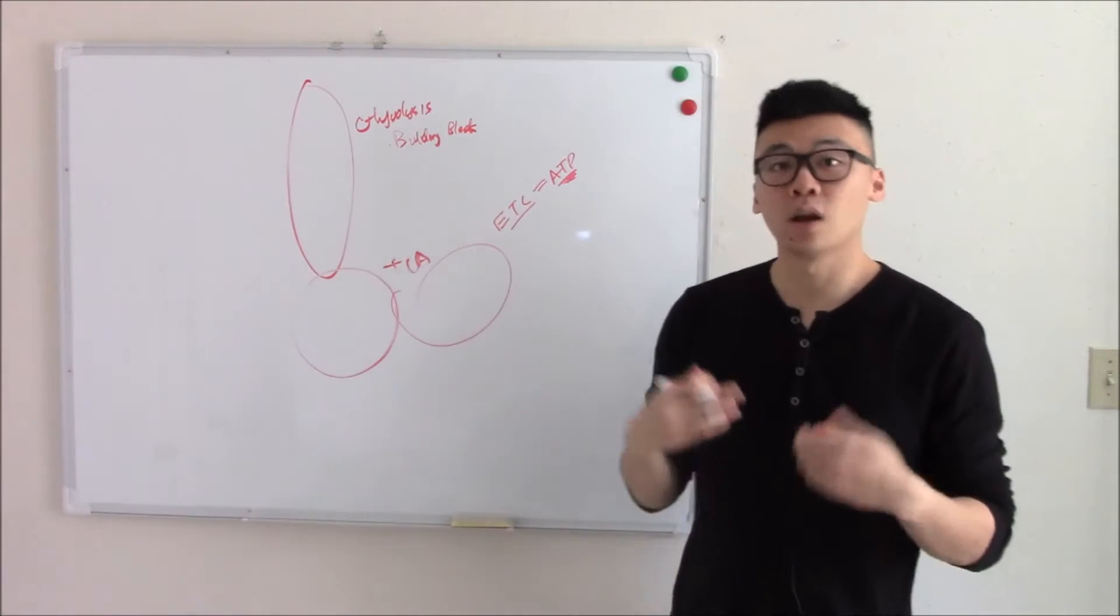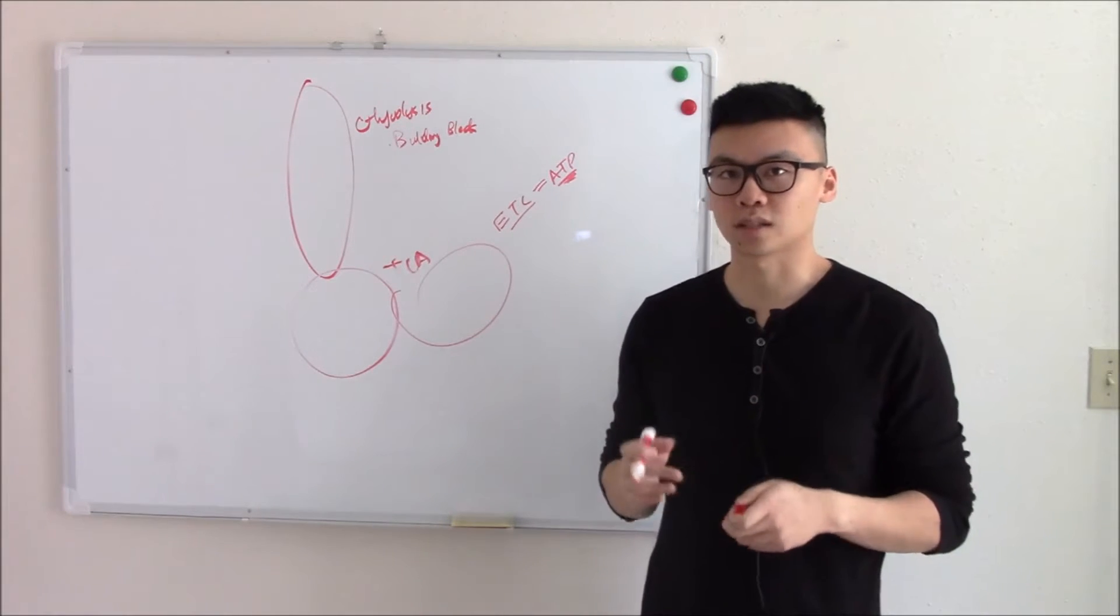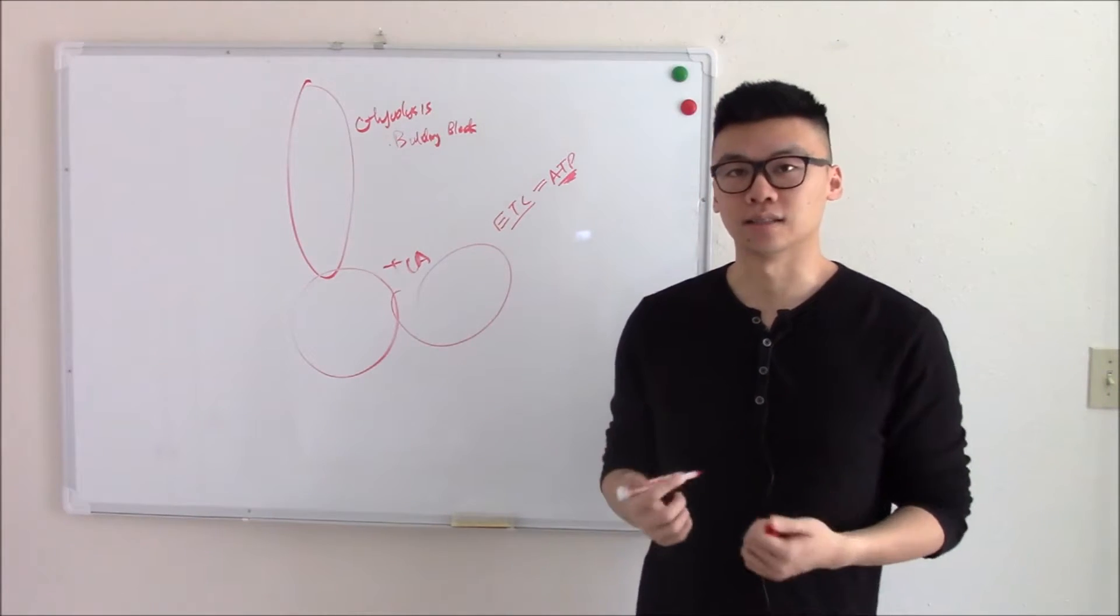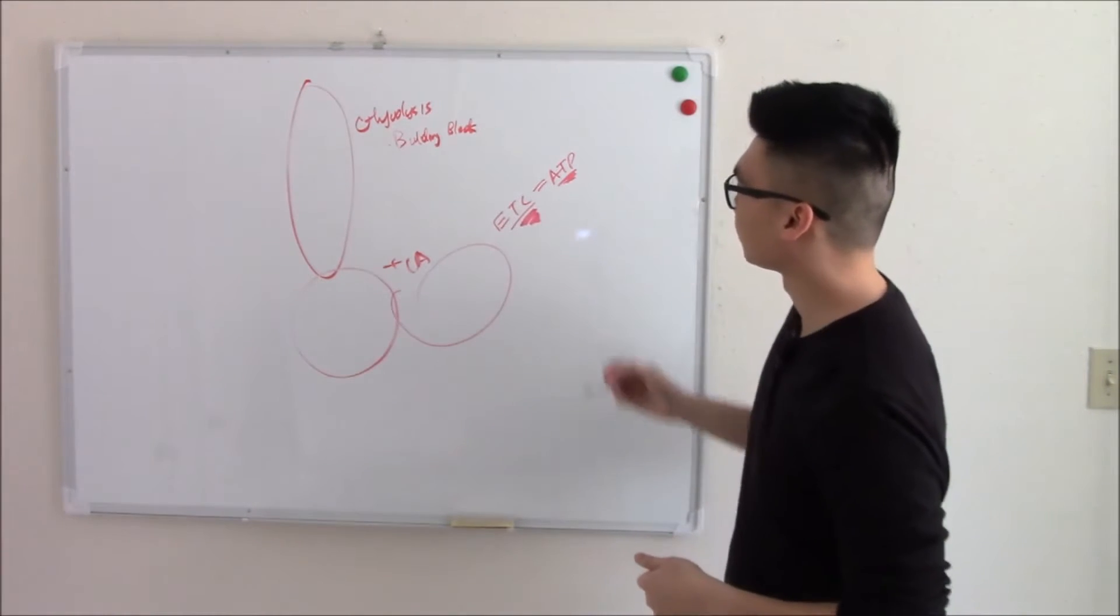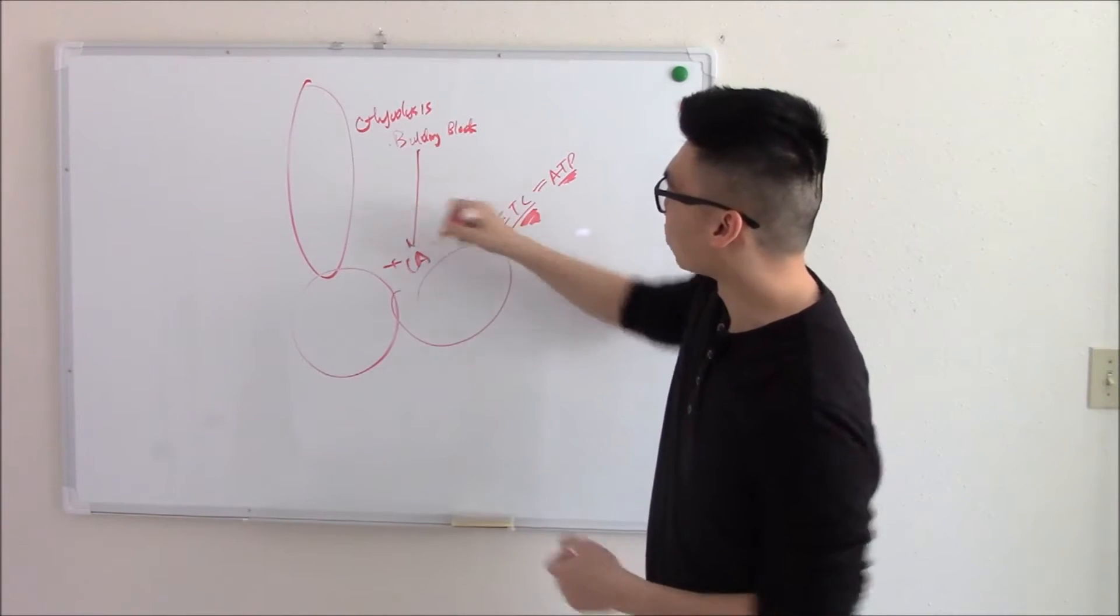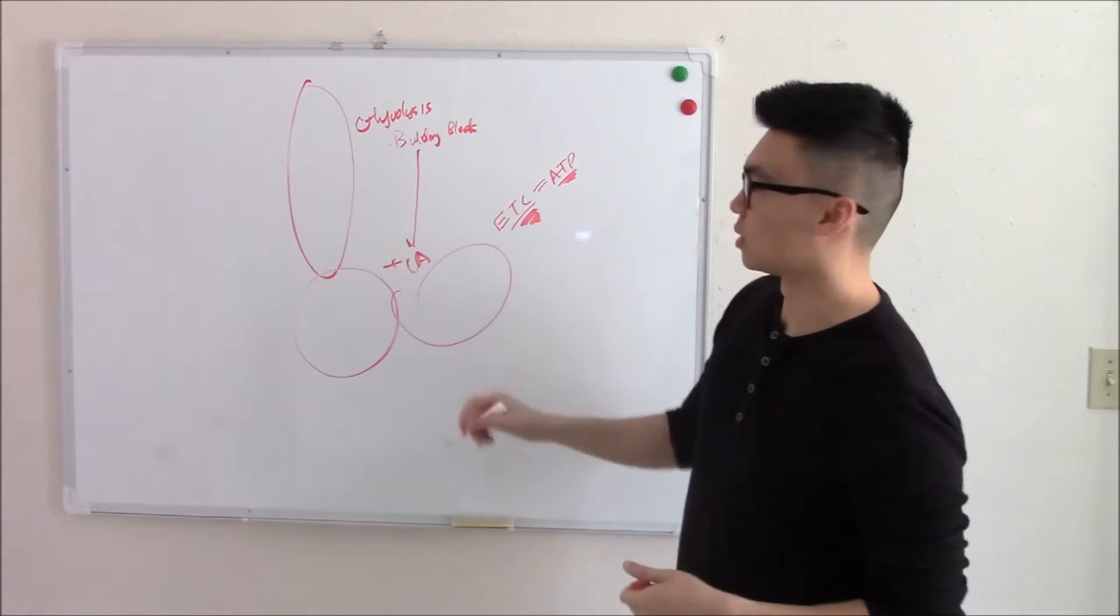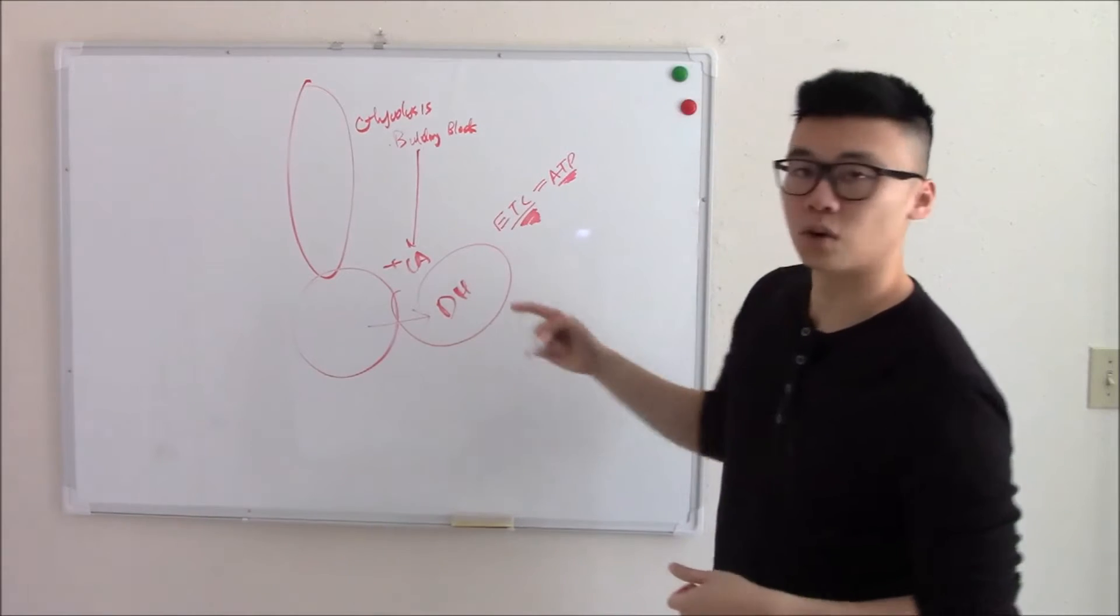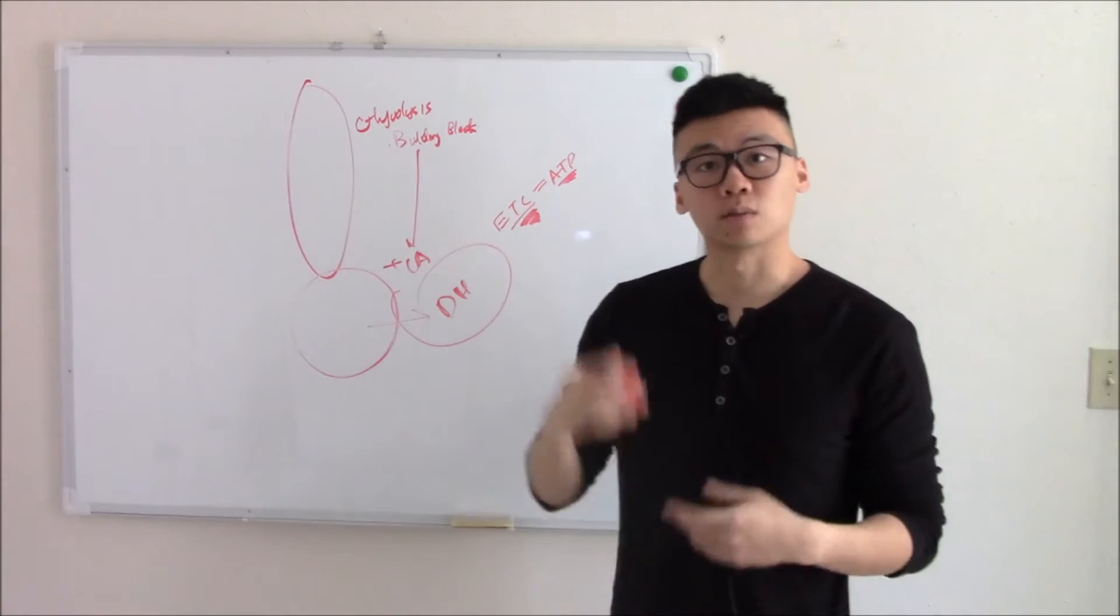Now the electron transport chain moves electrons. That's where it gets its name from. And when we went over terminology in our first video, we talked about something that helps move electrons. Do you remember what that was? Those are your dehydrogenases. So ETC needs a lot of dehydrogenases. That's where TCA comes in. TCA is the bridge between glycolysis and ETC. It takes those building blocks and makes those dehydrogenases for the ETC cycle. So that is a three step process from glucose to ATP.